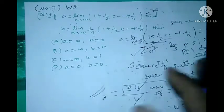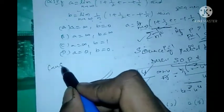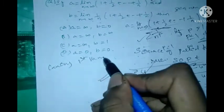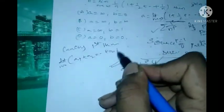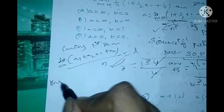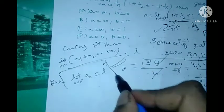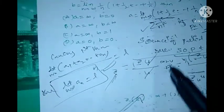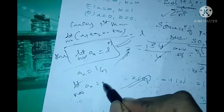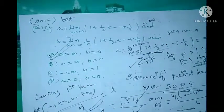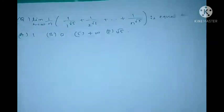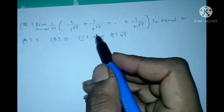For B, using Cauchy's first theorem on limits: if lim (n→∞) of (a_1 + a_2 + … + a_n)/n = L, then lim (n→∞) of a_n = L. Here a_n = 1/n. Applying the limit: lim (n→∞) of 1/n = 0. Therefore B = 0, and option A is the correct answer.